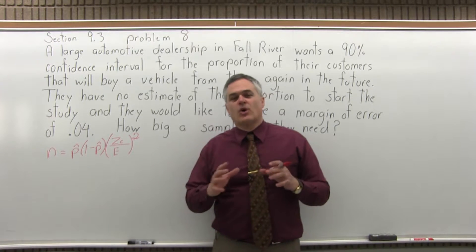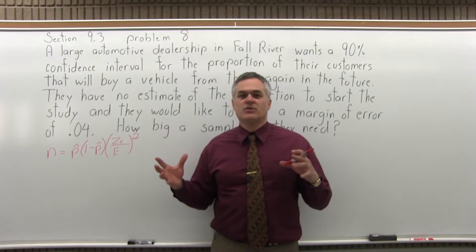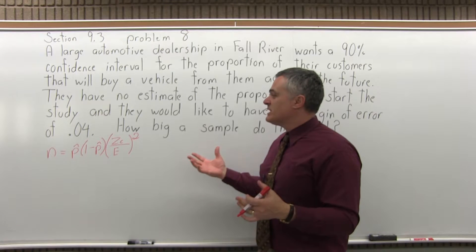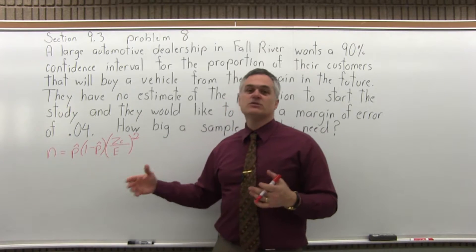When this happens, what you want to do is use .5 for your p hat and what that's going to do is it's going to overestimate the size of the sample you need a little bit, which will give you a little bit more accuracy. So if you have a good estimate go ahead and put it in for p hat and if you don't just go with .5.